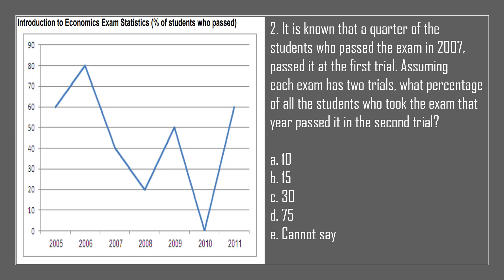Question 2. It is known that a quarter of the students who passed the exam in 2007 passed it at the first trial. Assuming each exam has two trials, what percentage of all the students who took the exam that year passed it in the second trial? A. 10. B. 15. C. 30. D. 75. E. Cannot say.